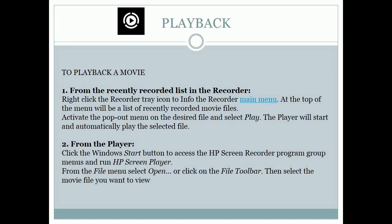2. From the player: Click the Windows Start button to access the HP Screen Recorder program group menus and run HP Screen Player. From the File menu, select Open, or click on the file toolbar. Then select the movie file you want to view.